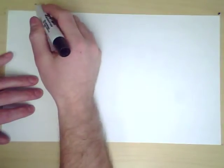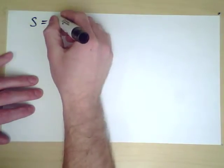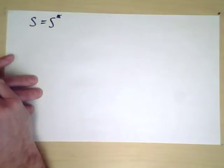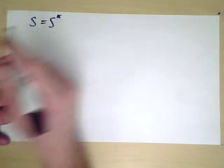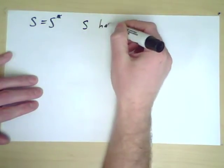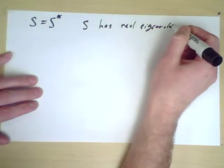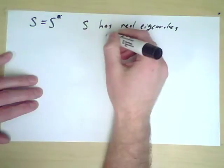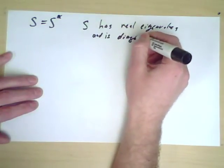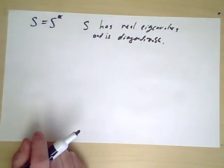So last week you showed that suppose you have a matrix that's called S which is self-adjoint or Hermitian. Then we know that S has real eigenvalues and it's diagonalizable using those eigenvalues.